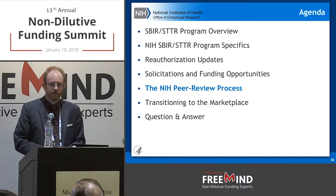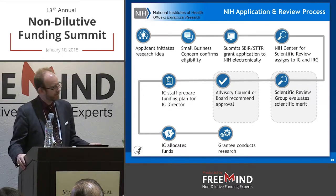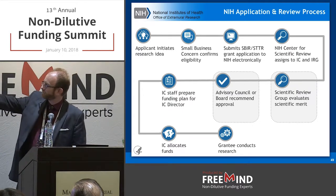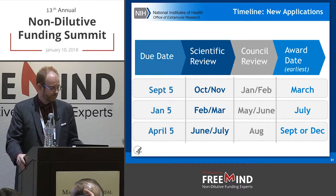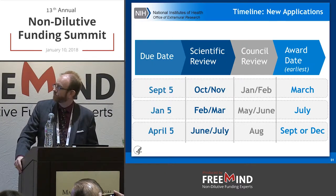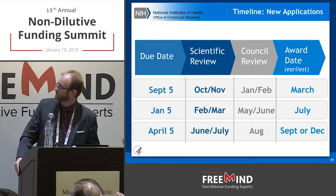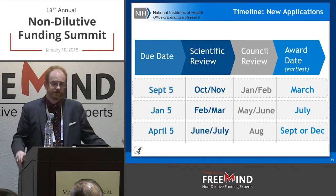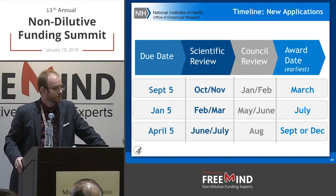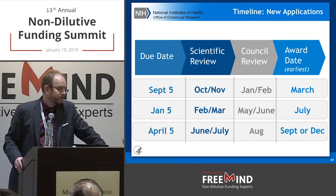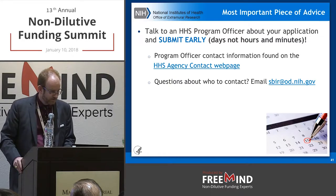Peer review is a whole other talk, but SBIRs go into special small business panels made up of a mix of academic and industry reviewers — it's a long and winding road from submission to award, using external peer review. Standard due dates are September, January, and April 5th. The January 5th deadline goes to peer review in February/March, secondary advisory council in May/June, then funding in July or August at end of fiscal year. Some timelines are delayed when we don't have a budget — that's one of the few things outside of our control.